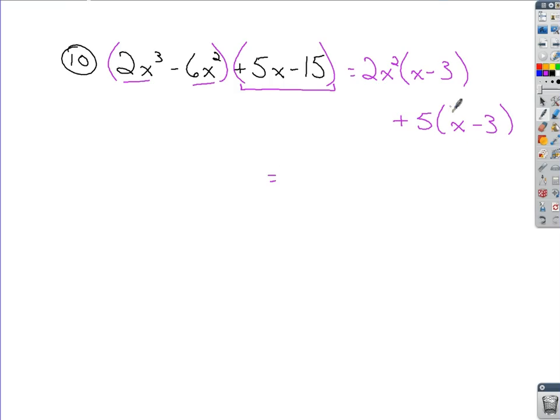To finish this thing off, what you do is you take this X minus three, you bring that to the front. In doing that, you factored it out. So what remains are these other two terms. The 2X squared plus the 5. There's your factorization. Thank you.